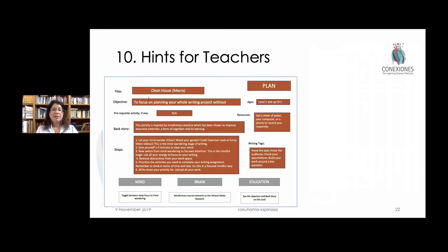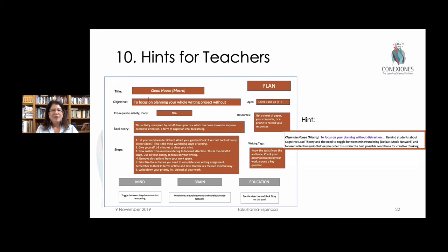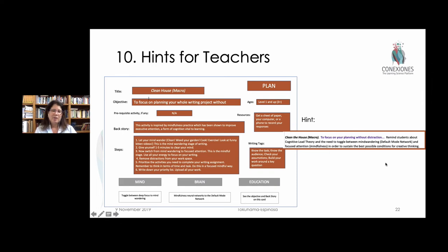A tenth tool offered in the ThinkWrite program has to do with hints for teachers. Many of the recipe cards with activities are attached to specific hints. For example, one about how to clean house and let your mind wander — allowing students to toggle back and forth between the default mode network and very specific focused attention. That's great, but students might not know what they're doing. The hint calls out to the teacher to remind them of the importance of this and what is actually going on in the brain, so they can share that with students and make them part of their own learning process.